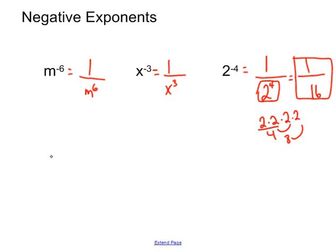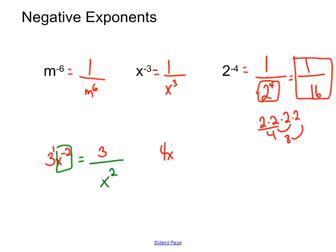If we have 3x to the negative 2nd power, we don't move everything — we only move what has a negative exponent. The 3 is a coefficient multiplying the x, so we move just the x and its negative 2nd power underneath. Now the x is happy. If you don't see an exponent on a number, it has a positive exponent of 1, meaning it's happy where it's at. So for 4x to the negative 8th: the 4 stays exactly where it is, and the x goes underneath.